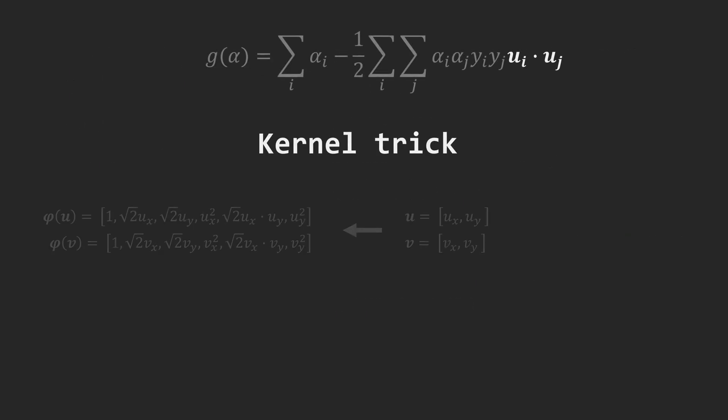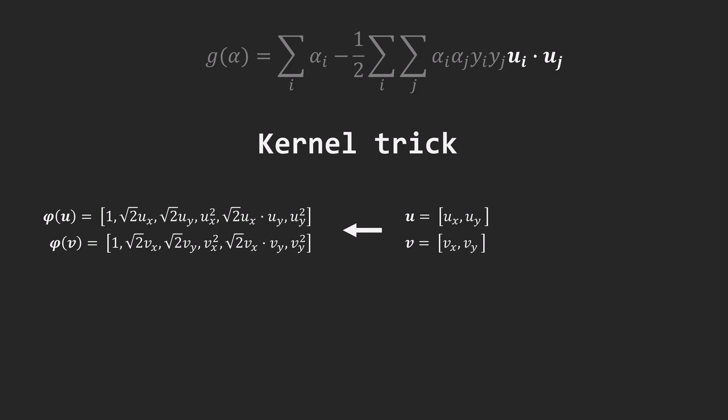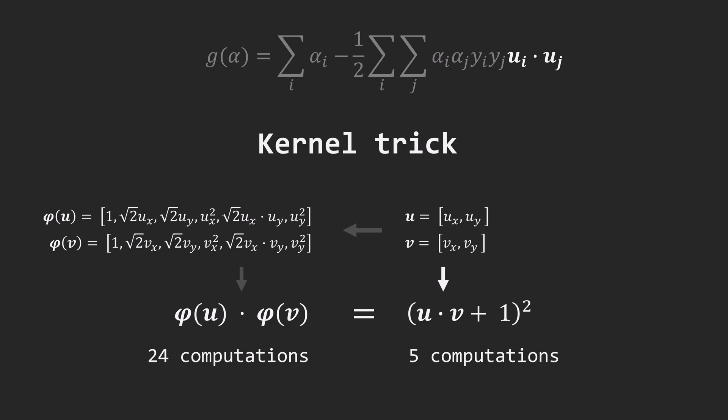So, instead of explicitly mapping the data to a higher dimension and computing the dot product directly, we use the kernel trick to compute it using the dot product in the original feature space. This way, we get all the benefits of a complex feature space without the computational cost. It's all about computational efficiency and mathematical elegance. And this is the kernel trick.